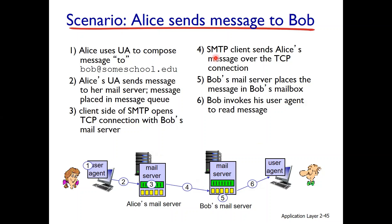The SMTP client sends Alice's message over the TCP connection. Bob's mail server places the message in Bob's mailbox. Bob then invokes his user agent — his mobile app — to access the mail server and read the email.